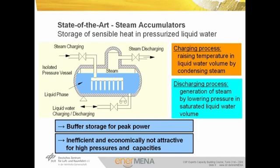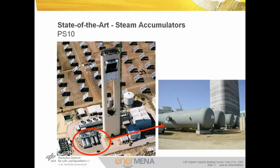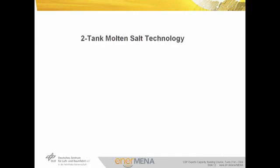Steam accumulators are preferred as buffer storage used for providing power for a short period. The capacity-specific costs are dominated by the expense for the pressure vessels and increase significantly at higher temperatures. An exemplary application for steam accumulators are the PS10 and PS20 power plants, which use saturated steam as working fluid produced in a central receiver. Steam accumulators are used to operate the power blocks during a period of about 50 minutes at 50% power. Main components of these storage systems are four pressure tanks filled with liquid water. Steam accumulators were chosen for the PS10 plant since this was the only commercially available storage concept at the beginning of construction.